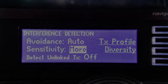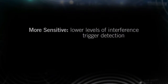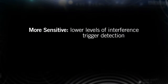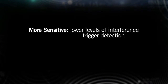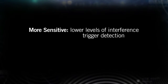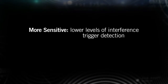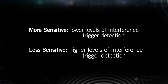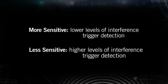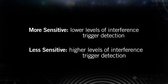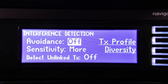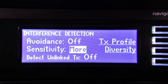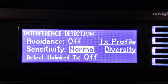When set to more sensitive, the receiver provides more advanced notice when interference occurs. When set to less sensitive, the receiver is more conservative in its evaluation of interference. The default setting for interference detection sensitivity is normal.